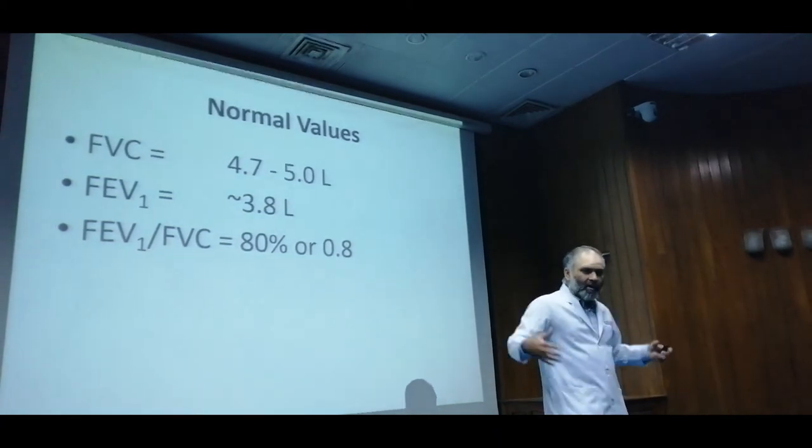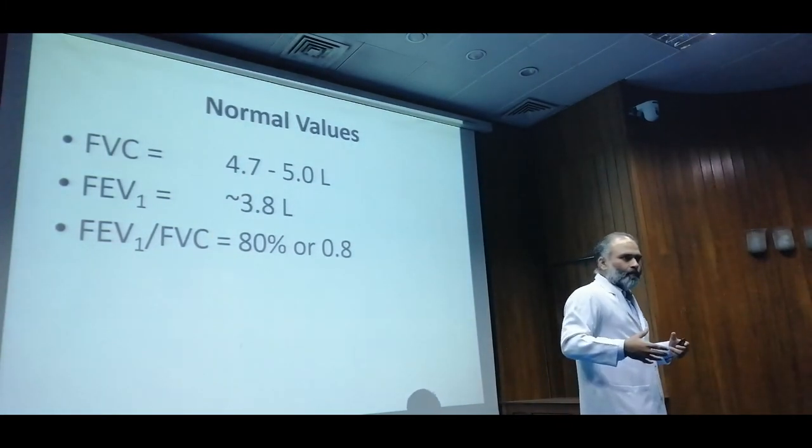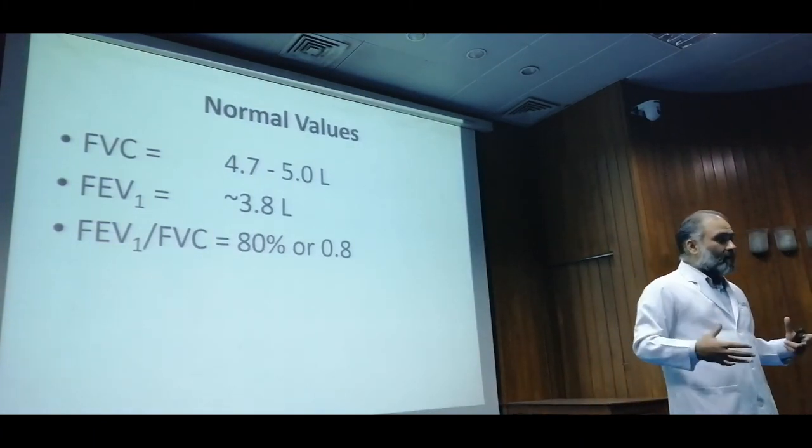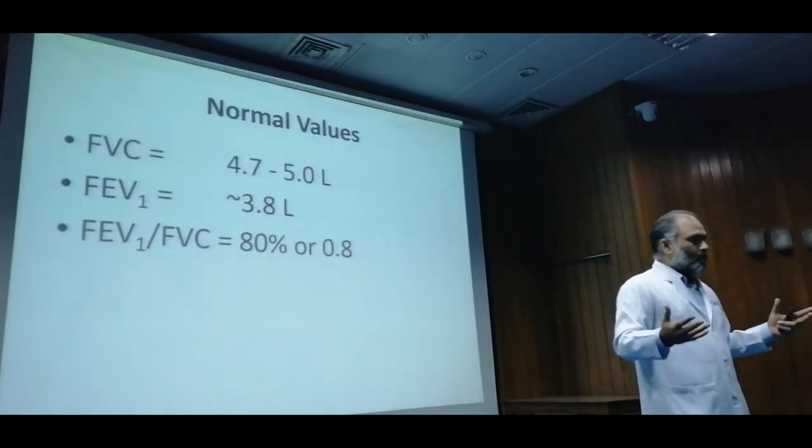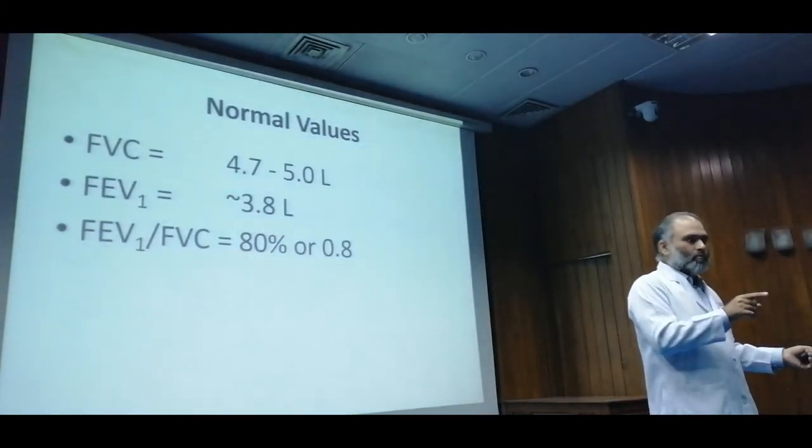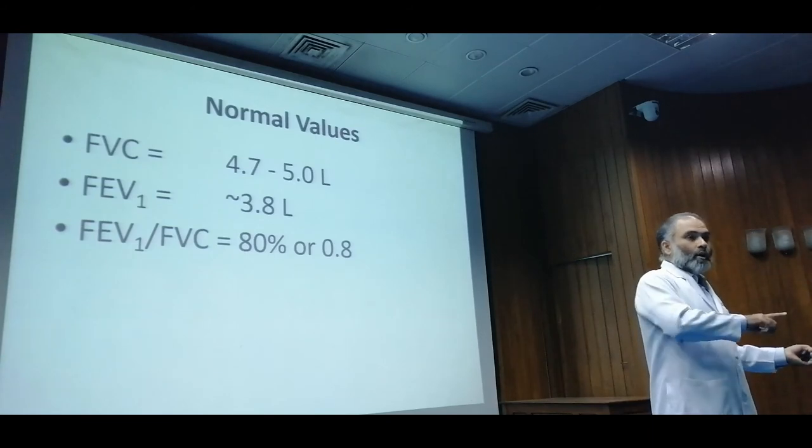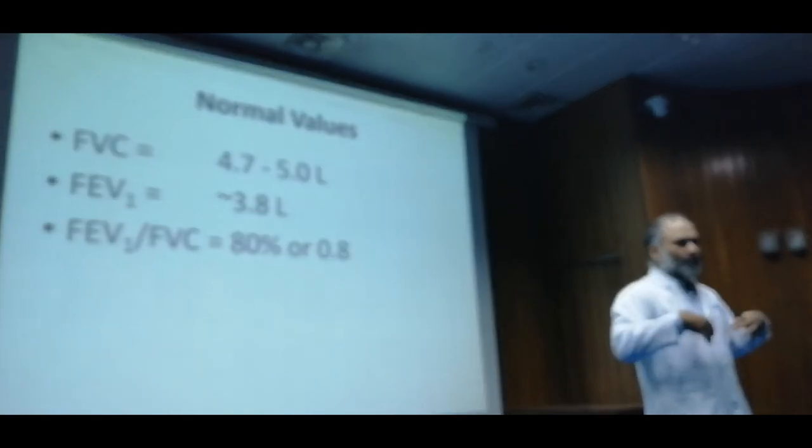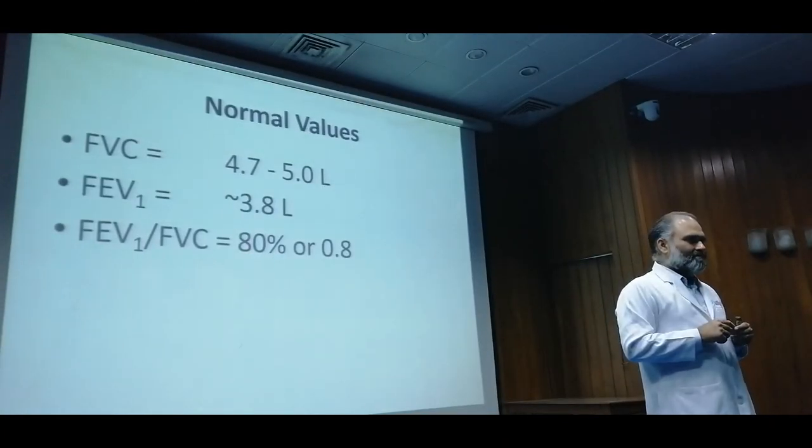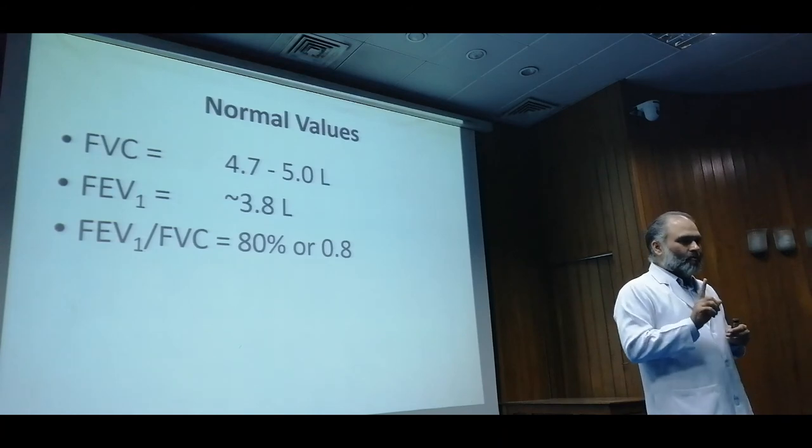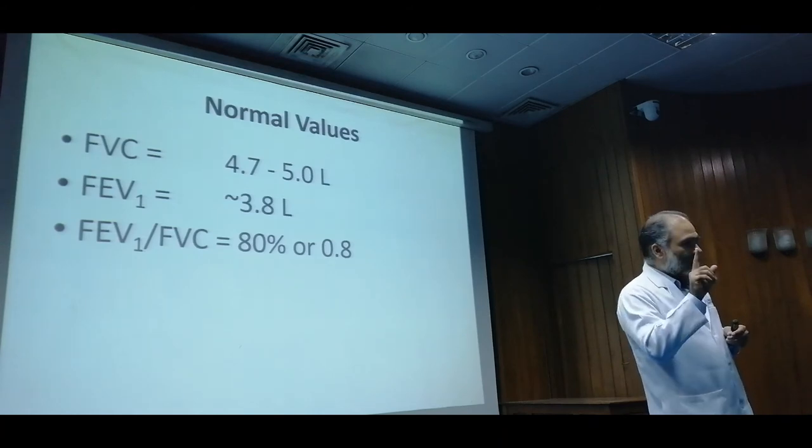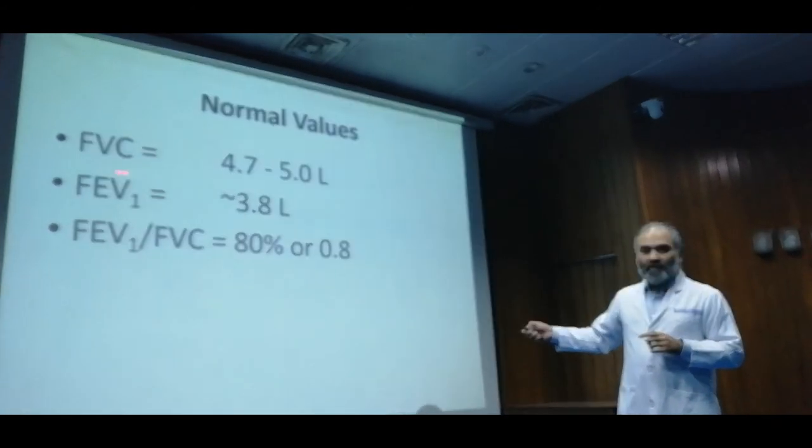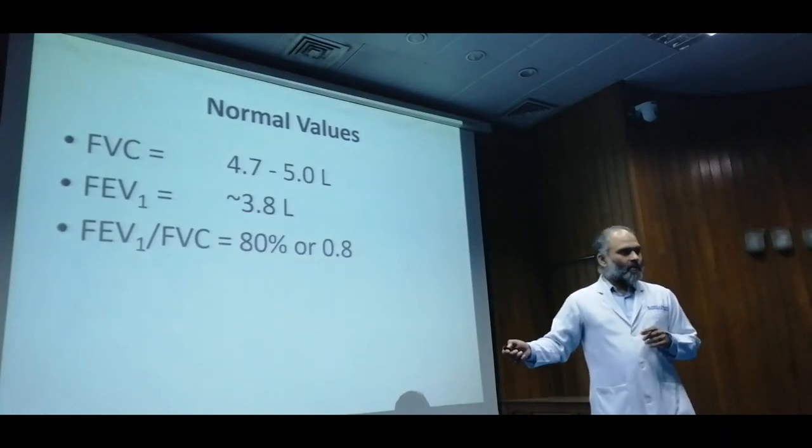So normal lungs, elastic recoil and all that effort that we have read, is so healthy and nice, excellent. The recoil, everything, is so good that you get out 80% of that in the first second. This is the first second. You may not catch him in an FVC maneuver if the patient is clever and does not want to be embarrassed in front of you. He knows that he is not well. He will try his best not to be, and the value will obviously be less. He has to push.